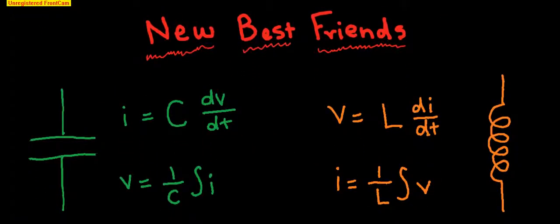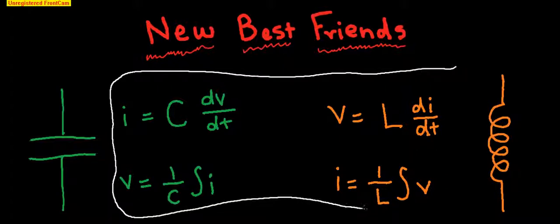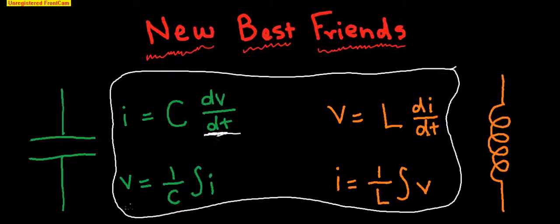These guys right here are your new best friends. More specifically, these equations. You should become very comfortable with these things over the course of the semester, because this is the basis of why we end up with differential equations. The current for a capacitor is equal to the capacitance times the change in voltage over time. This is a differential. This is why we end up with differential equations. And if you rearrange the equation, you can get it in terms of voltage, and you can say the voltage is equal to one over the capacitance times the integral of the current. This is going to factor into giving us a differential equation, because we're getting integrals and derivatives.